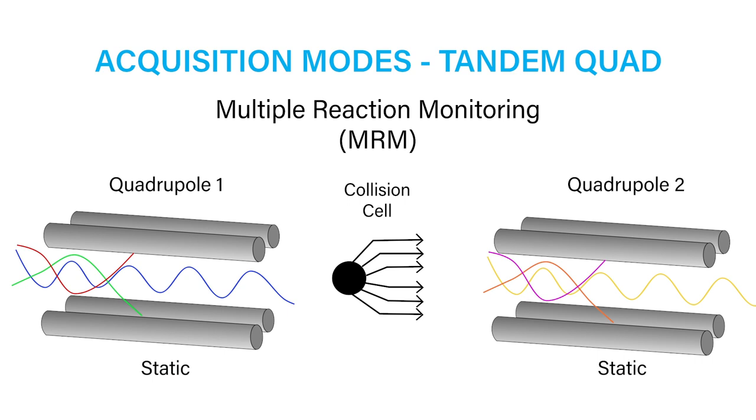This is the most common way to use a tandem quad because it is the most sensitive mode for quantitative analysis. The first quadrupole will pass only the precursor or intact form of the analyte, while the second quadrupole is set to pass a specific fragment of the analyte that was generated in the collision cell.